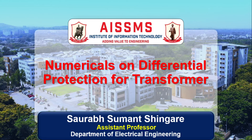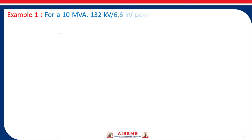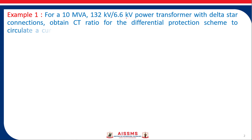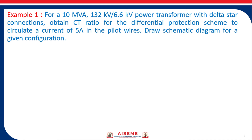Hello friends, today we are going to see some numericals on differential protection for transformers. The first example: for a 10 MVA, 132 kV by 6.6 kV power transformer with delta-star connections, obtain the CT ratio for the differential protection scheme to circulate a current of 5 amperes in pilot wires, and draw a schematic diagram for the given configuration.